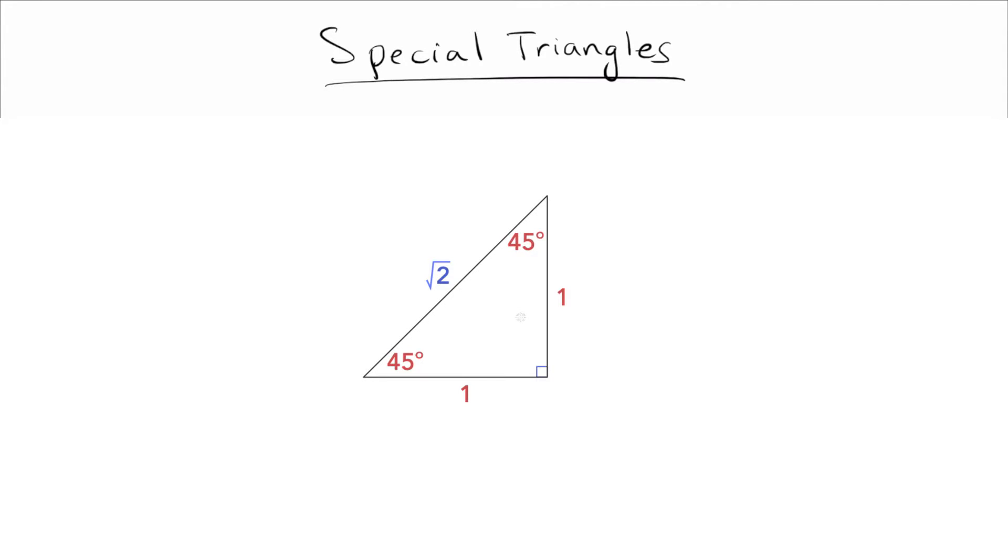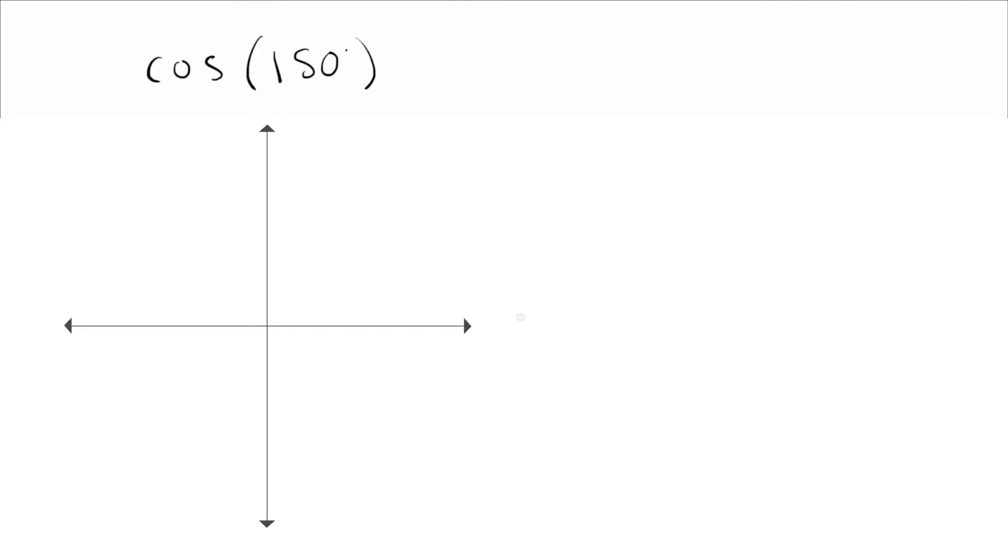So let's see now, how do we actually use these to do problems? So let's say your teacher asks you to do something like find cosine of 150 degrees. So the first thing you need to do then is locate 150 degrees on your unit circle. So the way I like to do that is to spin forward 180 degrees and then back up 30 degrees, because 180 degrees minus 30 degrees is going to give me 150 degrees, just what I want.